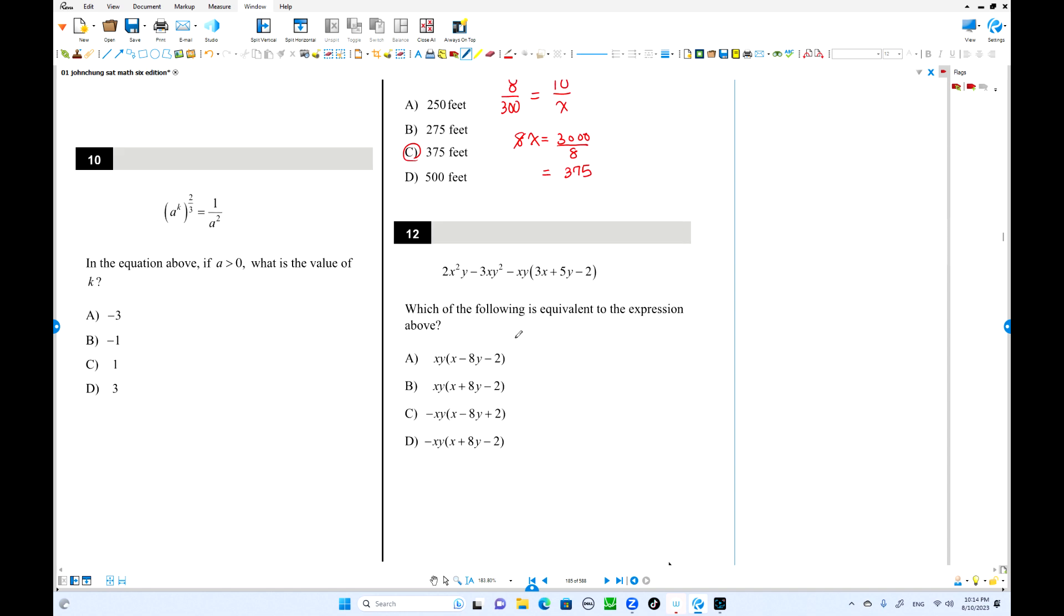Number 12. Equivalent expression. So expand this side: 2X squared Y, 3XY squared, minus 3X squared Y, minus 5XY squared, and plus 2XY. We have like terms here. 2 minus 3 is minus X squared Y. These two terms are like terms: negative 3 minus 5 is negative 8XY squared, and this one is 2XY. So common factor of this one: X and Y. We still have a negative sign.